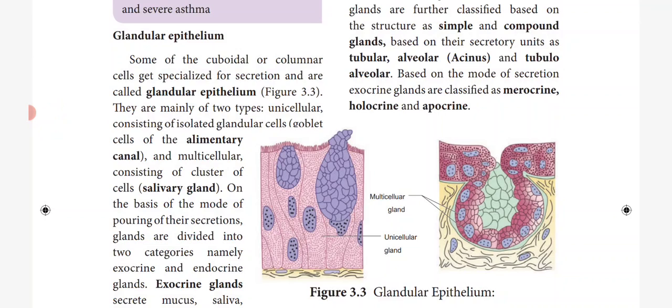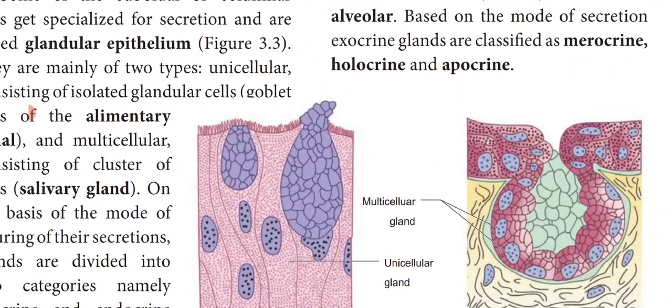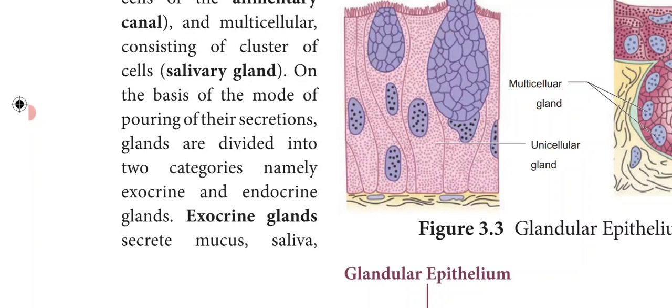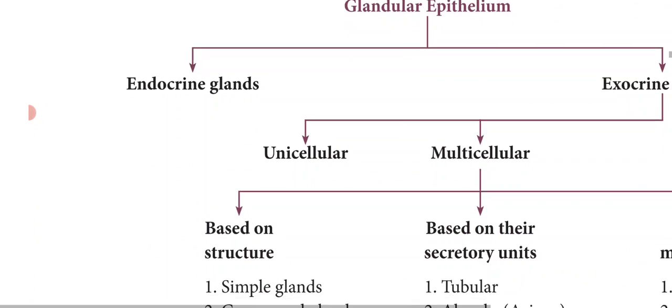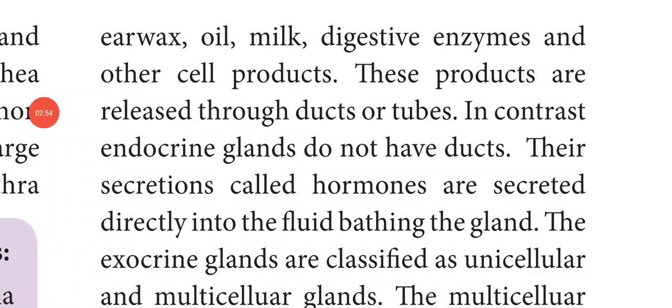Based on the mode of pouring of secretions, glands are divided into two categories: exocrine and endocrine glands. Exocrine glands have ducts and endocrine glands don't have ducts. Exocrine glands secrete mucus, saliva, earwax, oil, milk, digestive enzymes and other cell products.